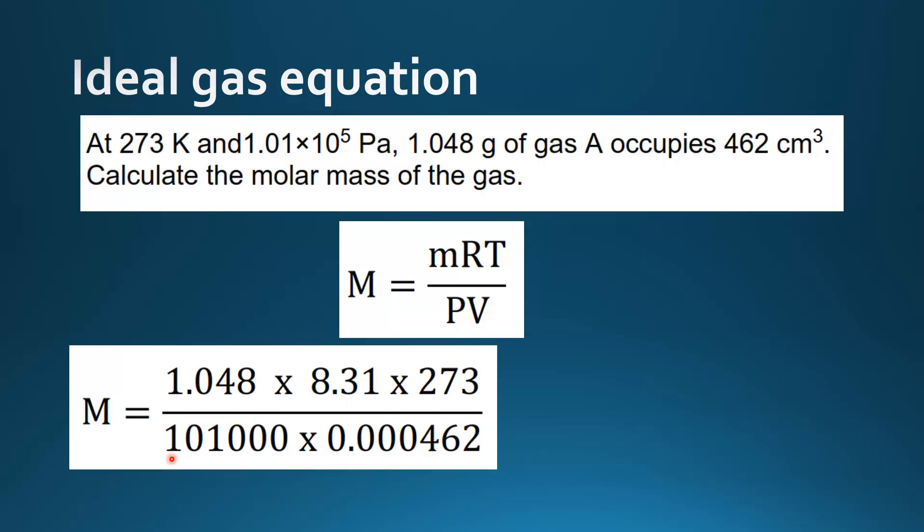We divide that by the pressure, which is 101,000 pascals. And we multiply by the volume in meters cubed. In the question, the volume is given in centimeters cubed. So I divide this by 10 to the 6 to get meters cubed.